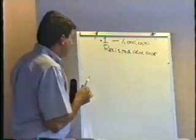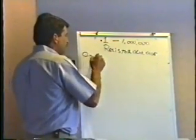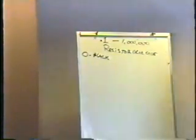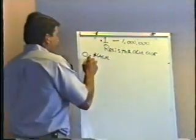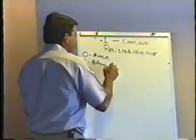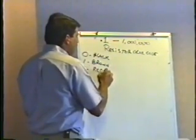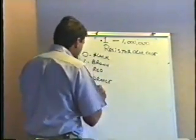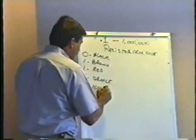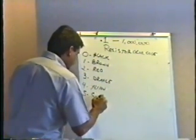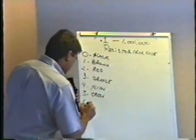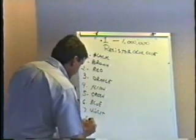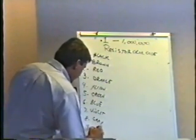Each color represents a number. Zero is represented by black, one is brown, two is red. These are in ascending chromatic scale — the same way a rainbow is set up. Three is orange, four is yellow, five is green, six is blue, seven is violet, eight is gray, and nine is white.